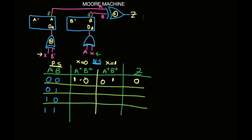Now let's see what happens when B is 1. B is 1, B prime is 0, A is 0. When X is 0: 0 XOR 0 gives 0, 0 OR 0 gives 0, so A plus and B plus are 0, 0. Remember, this is a D flip-flop, so whatever comes here translates to A plus. When X equals 1: 1 OR 0 gives 1 and 1 OR 0 gives 1, so we have 1, 1.